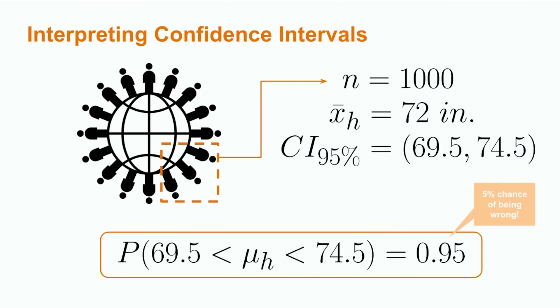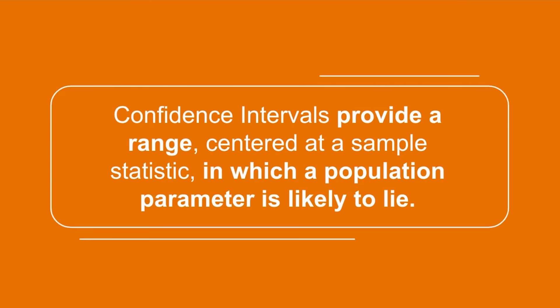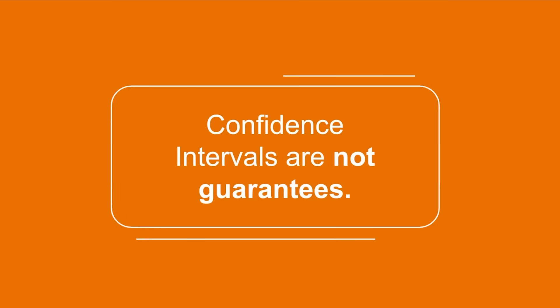Statisticians must strike a balance between narrow estimates, which may be incorrect more often, and high confidence levels, which sometimes require intervals so large that they are no longer meaningful. In short, confidence intervals provide a range centered on a sample statistic in which a population parameter is likely to lie. They cannot determine an exact value of the population parameter, nor how close that parameter is exactly to the sample statistic, but only a probability that the parameter is in that range.